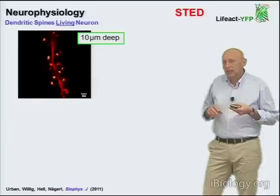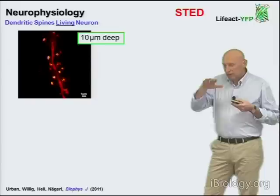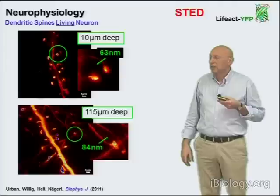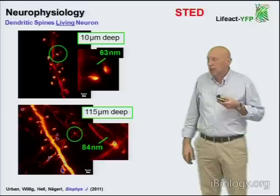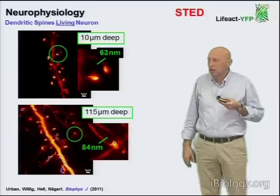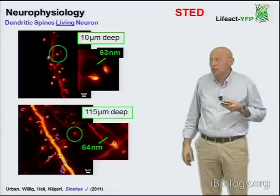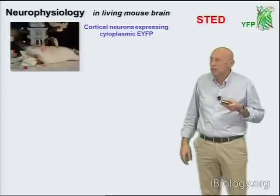A strength of the STED concept is that it can be neatly integrated with a confocal microscope, improving the resolution of confocal microscopy very easily. It also means that one can image deeper down into specimens. This is demonstrated here — 10 microns deep, 25 microns deep, 65 microns deep, 115 microns deep — and the high spatial resolution is fully maintained throughout. In the future, it may be possible to go even deeper with special optics, but the key point is that you can focus into deep regions of neuronal tissue and still have high spatial resolution in living tissue.